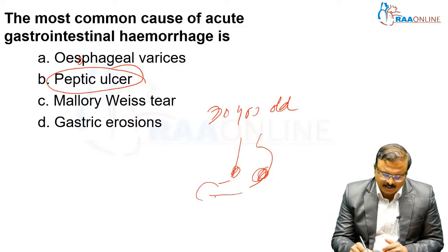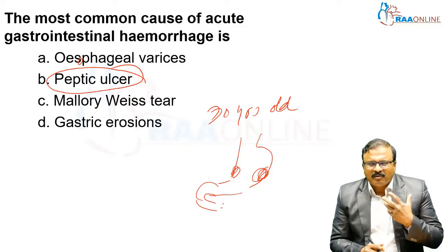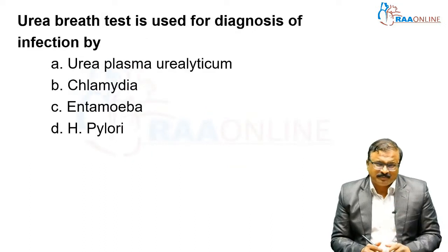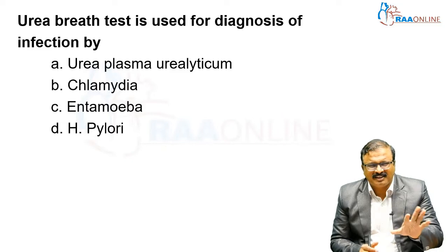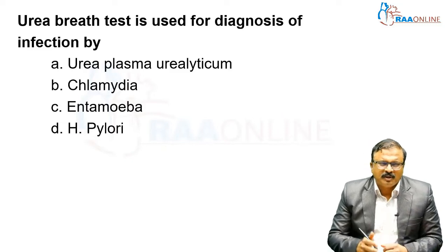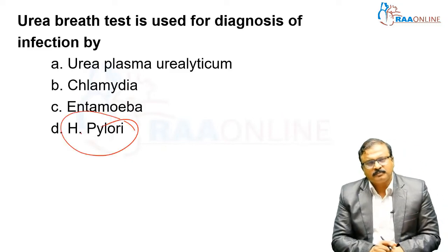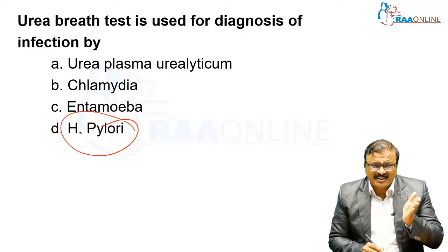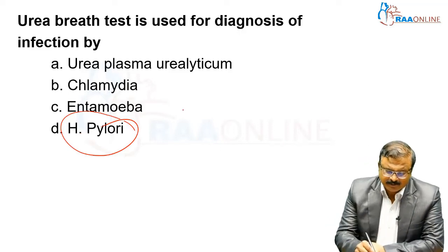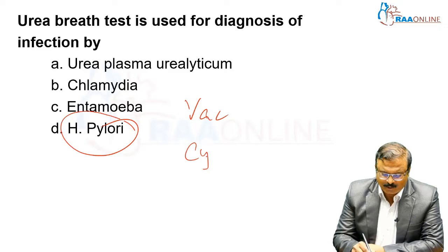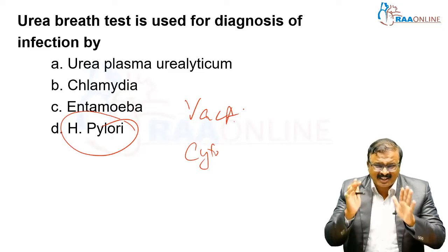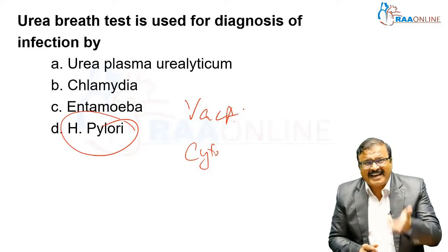H. pylori is found in the duodenum, and what bleeds in a duodenal ulcer is the gastroduodenal artery. The urea breath test is used in diagnosing H. pylori infection. H. pylori is a very important pathogen which produces effects via various toxins — the VacA (vacuolating cytotoxin) is the most common, invading cells and producing cell damage, ulcers, and atrophic gastritis.